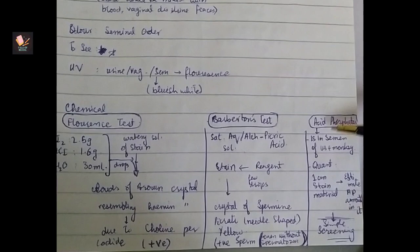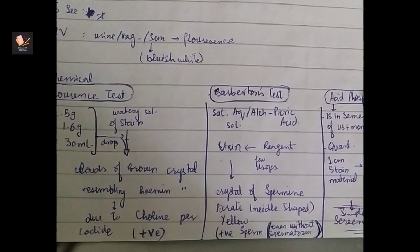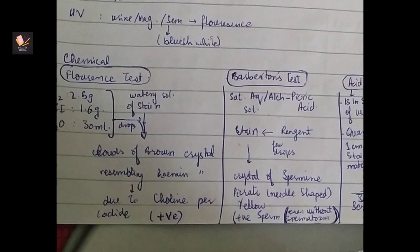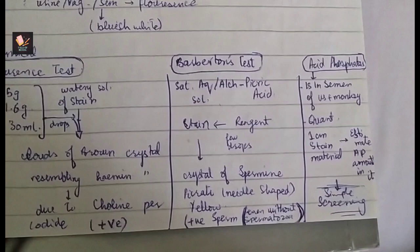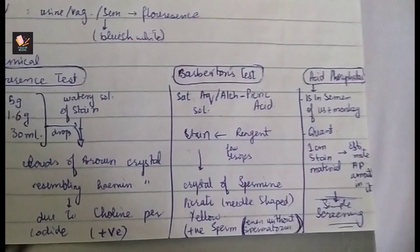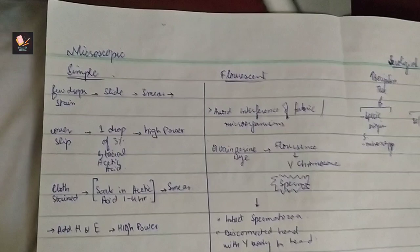Acid phosphatase is present in the semen. This is a quantitative test. We take 1 cm stained material and see quantity of stain. Acid phosphatase amount is simple screening is possible. Then we have a microscope test and fluorescent microscope test.